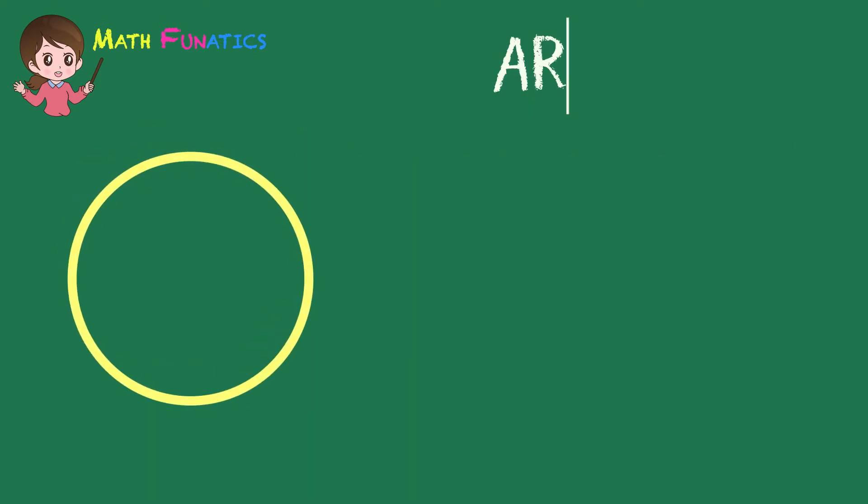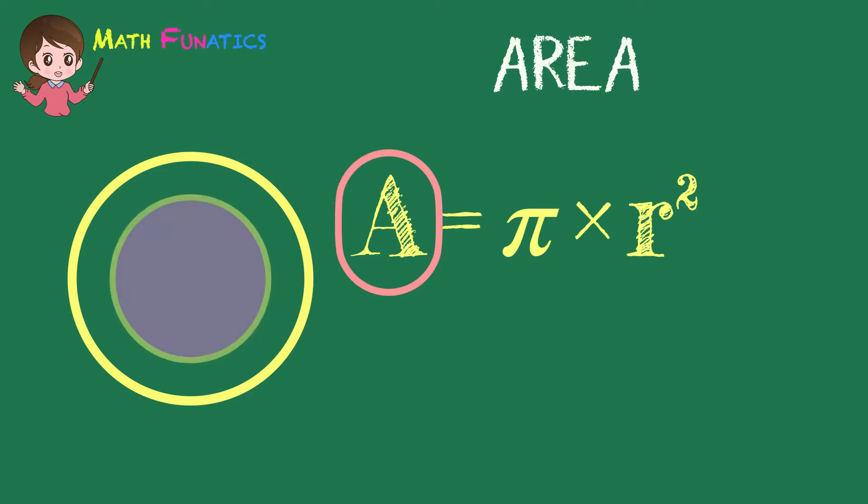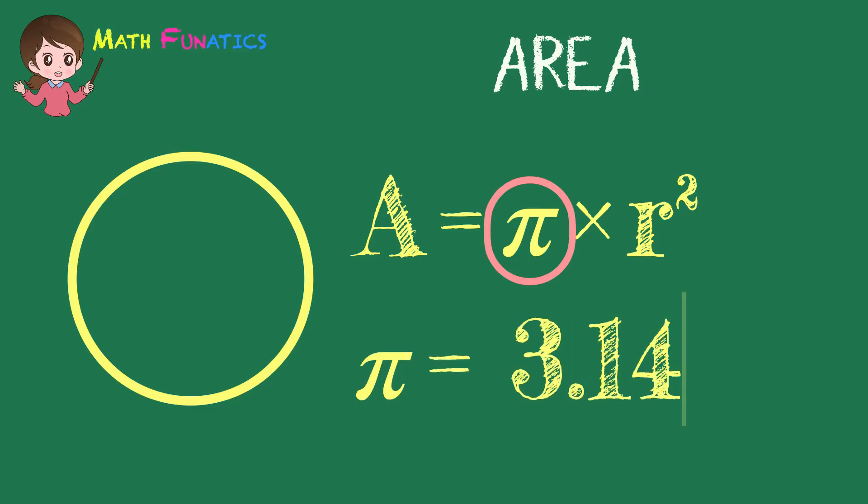To solve for the area of a circle, we use the formula A is equal to pi times the square of r. Where A stands for the area of the circle, pi has an approximate value of 3.14, and r stands for the radius of the circle.